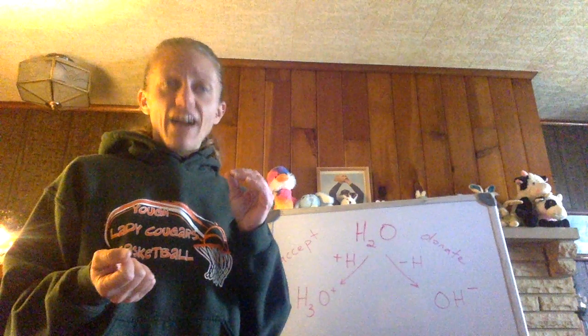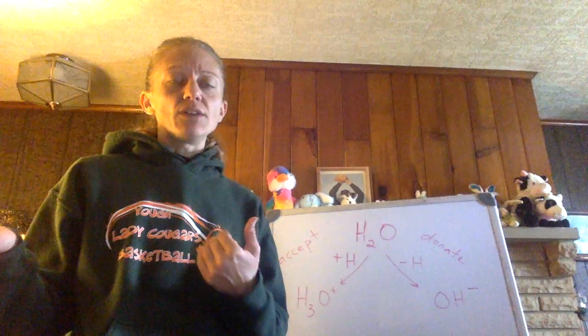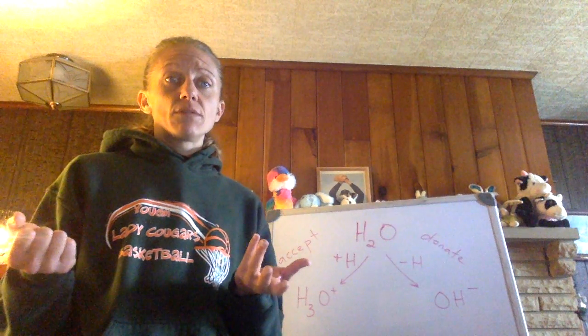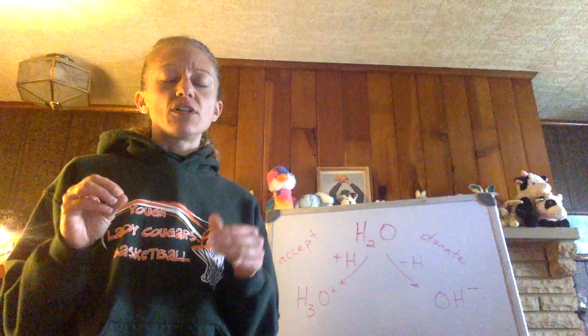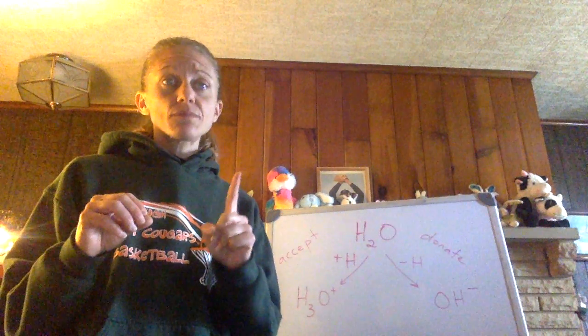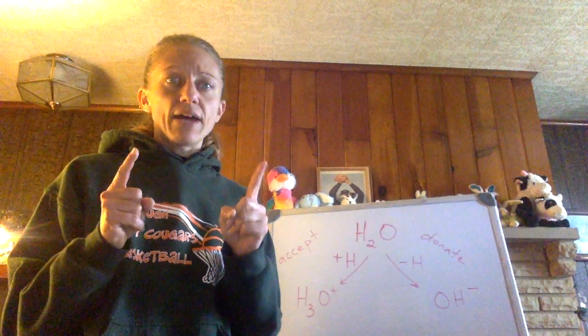So with the Bronsted-Lowry definition, we're still looking at the H+, the hydrogen cation, but we're looking at it as a proton. If you think about it, let's look at hydrogen. Hydrogen's number one on the periodic table with a mass of one. So it has one proton, one electron, no neutrons, because the neutron would give it more mass.